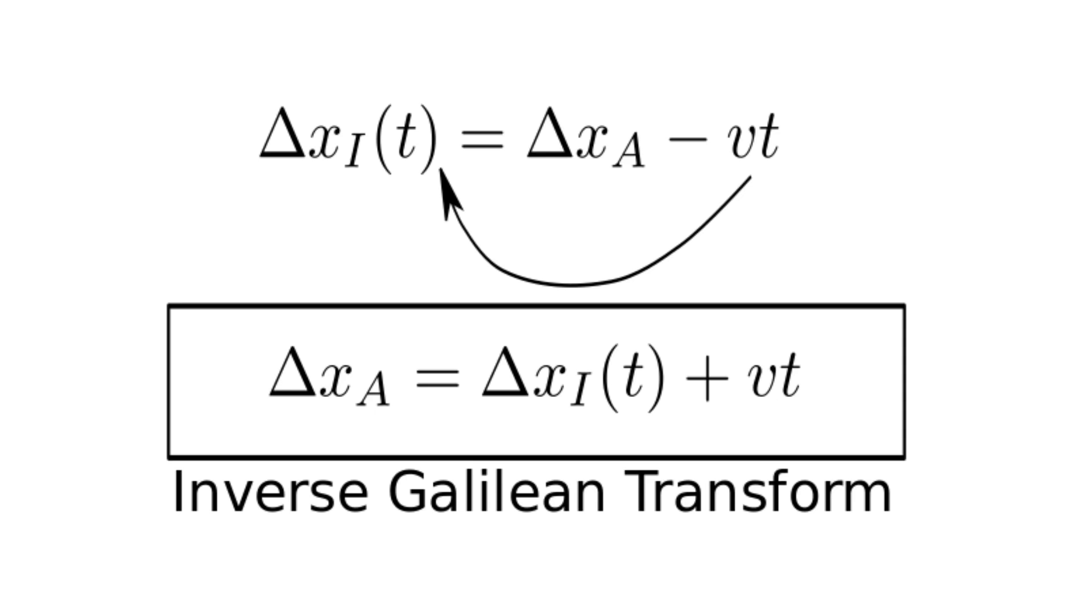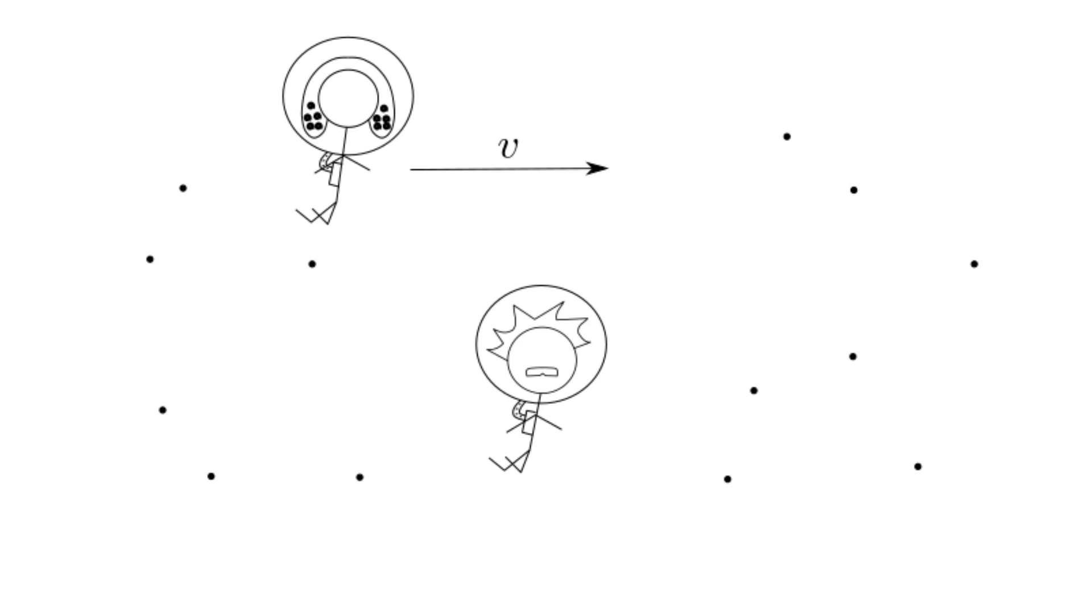Let's look at a different but similar situation. Now suppose Albert is floating around in space, and Isaac is floating past Albert at a speed v. When Isaac passes Albert, he takes out a ball and throws it at speed ui according to Isaac. However, since Isaac is moving relative to Albert, Albert will see the ball traveling at a different speed, call it ua.